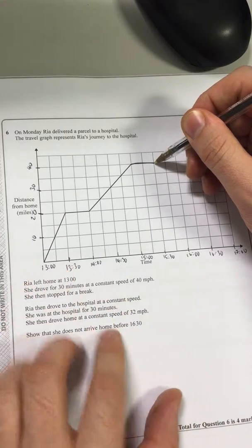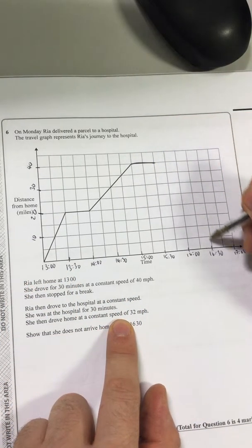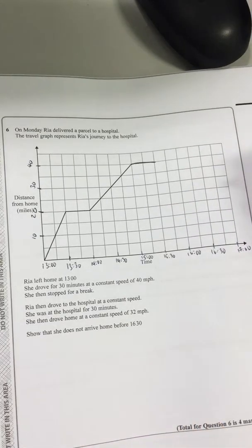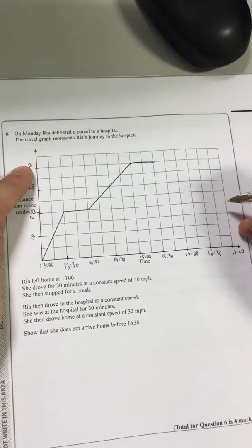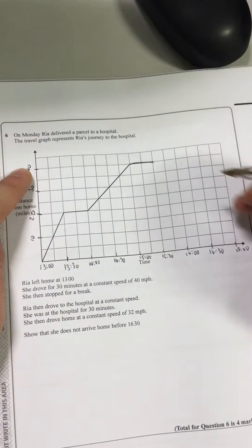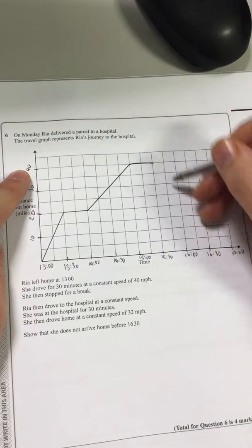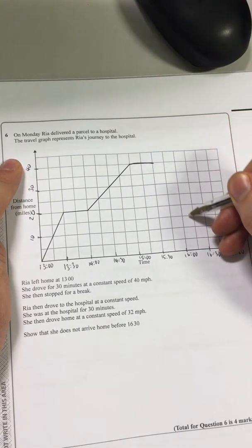And then she's going to come back at a constant speed of 32 miles an hour. Okay. So she's got 40 miles to go. Okay, so 40 miles to go, and she's going to travel at constant speed to come down here.